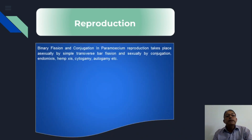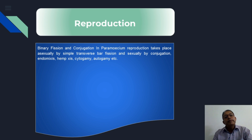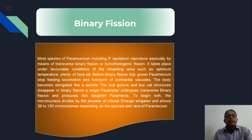Considering the reproduction behavior, via Google Meet we studied binary fission and conjugation in detail. The asexual mode of reproduction is known as binary fission, and the sexual mode of reproduction includes conjugation, endomixis, hemixis, cytogamy, autogamy, and synkaryon, among others.